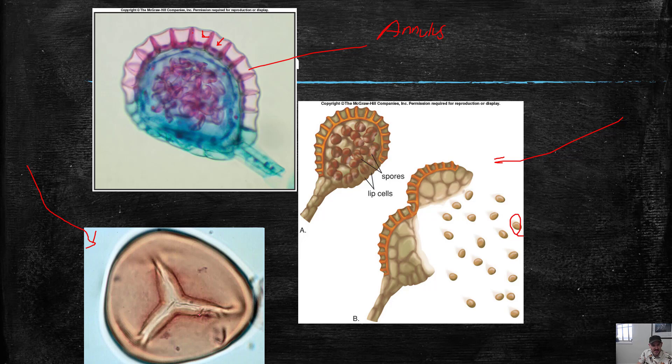And notice how it has this weird triangle shape on it. We call this a trilete mark. The reason that it has that is there used to be another spore attached here, another attached here, another attached here, making four total spores. Remember what happens in meiosis? You start with a cell, it undergoes meiosis one. Then it undergoes meiosis two, making four total cells. Well, these four spores were made by meiosis and they were all stuck together before they broke apart. And they left a little scar on each other because of that connection.